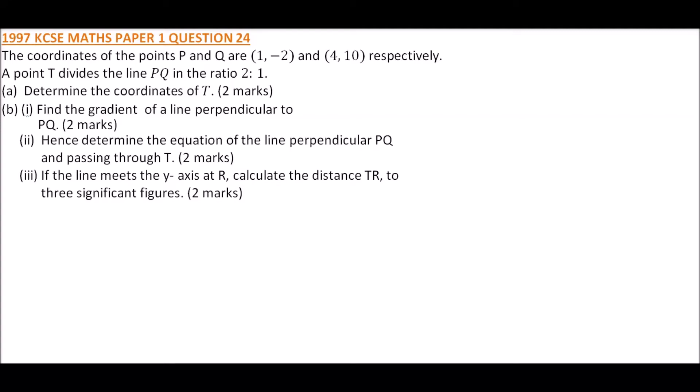97 Paper 1, question number 24. We are told the coordinates of point P and Q are (1, -2) and (4, 10) respectively. A point T divides the line PQ in the ratio 2:1. Determine the coordinates of T. Part B, roman number 1: find the gradient of the line perpendicular to PQ. Roman number 2: hence determine the equation of the line perpendicular to PQ and passing through T. And finally, roman number 3: if the line meets the y-axis at R, calculate the distance TR to three significant figures.